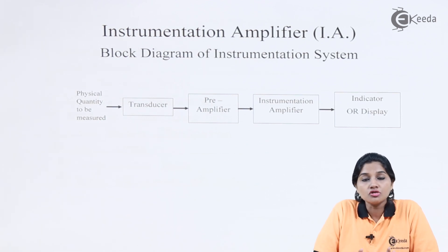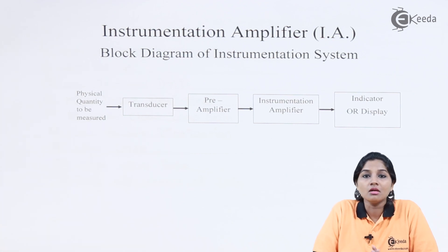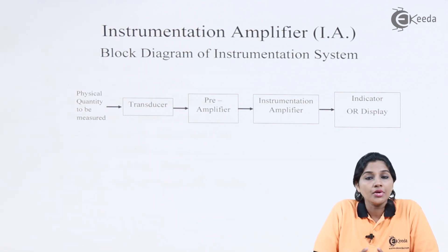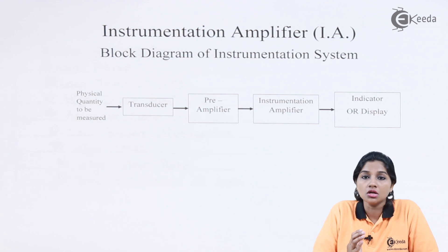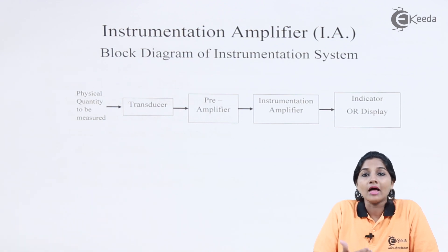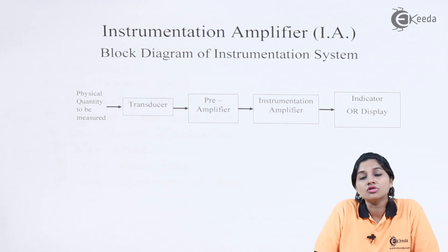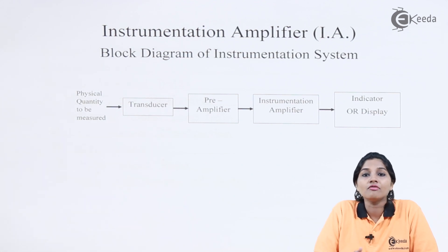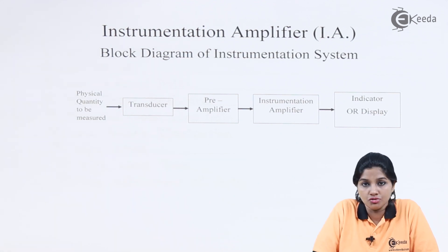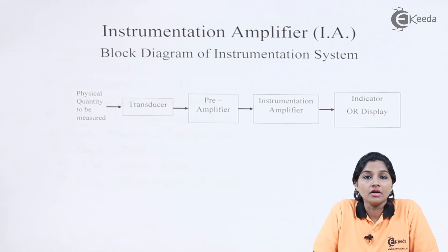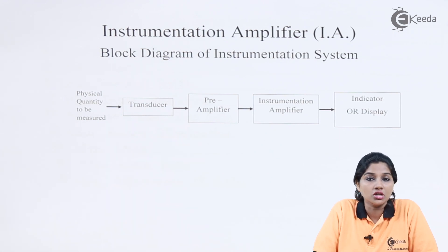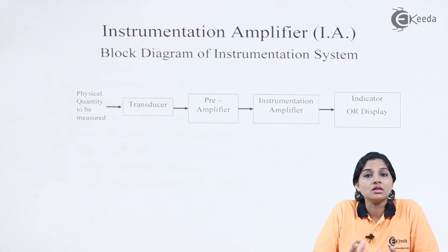In the case of an instrumentation system, the transducer is connected in a bridge circuit. The output of the transducer is given to the pre-amplifier by using a cable and connector. The pre-amplifier amplifies the low level signal from the transducer output, and then the signal is further given to the instrumentation amplifier. The instrumentation amplifier is nothing but the signal conditioner unit, conditioning the signal by performing various operations such as amplification, attenuation, integration, differentiation, and many more. Finally, the output is obtained on an indicator or display unit.